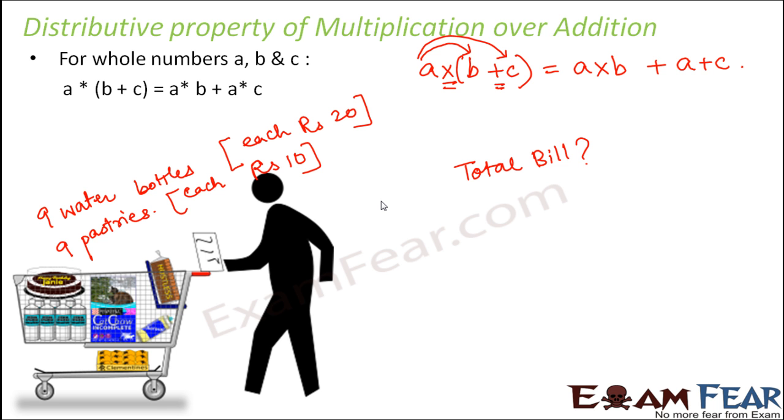Now it is very easy. Cost of one bottle is 20 therefore cost of nine bottles would be 9 into 20. Cost of one pastry is 10 so cost of nine pastries would be 9 into 10. So the total bill or total cost would be 9 into 20 plus 9 into 10. Then you multiply this, multiply this and add the two and that is how you arrive at the total bill.